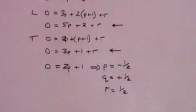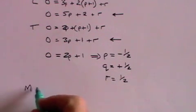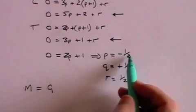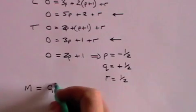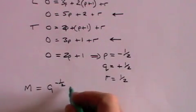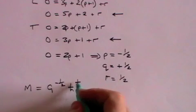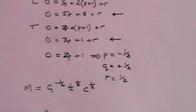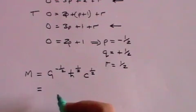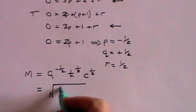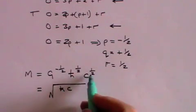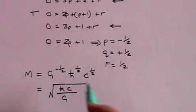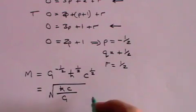So now we can write out the value of a fundamental M. It is G times P to the power P which is minus 1 half times H bar to the power Q which is plus 1 half times C to the power R which is 1 half. And that can be written of course as the square root of H bar C divided by G.